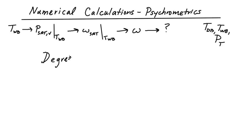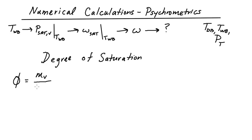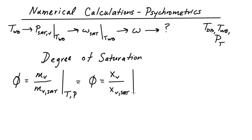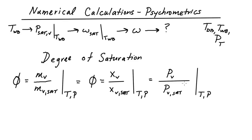That new parameter is called the degree of saturation. First, let me remind you of relative humidity, which we define as the mass of the vapor divided by the mass of the vapor if we were at a saturation condition, where both are at the same temperature and pressure. This can also be stated as the mole fraction of water divided by the mole fraction of water under saturation, or equivalently as the partial pressure of the vapor over the partial pressure of vapor at saturation, at the same temperature and total pressure.